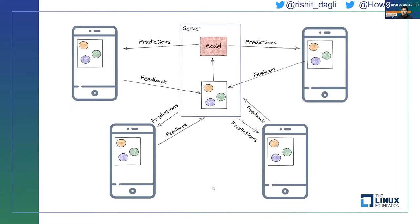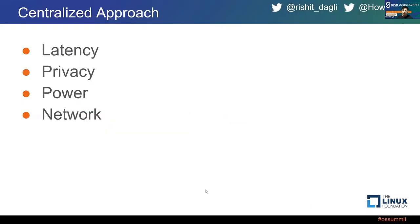This is a very standard approach that has worked for many applications — you scale it out with multiple edge devices giving feedback and the server retrains on all that data. However, with the centralized approach come questions of latency, since each round requires a network call via HTTP. There are also privacy concerns about sending user data directly to the server, and it is highly power consuming. These shortcomings led to something called machine learning on the edge.